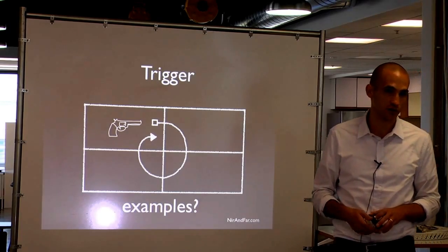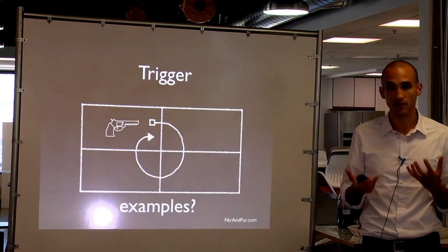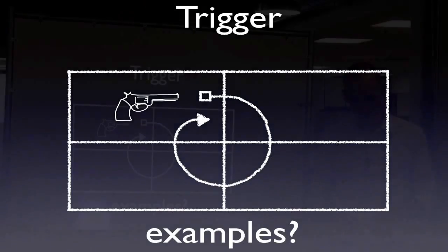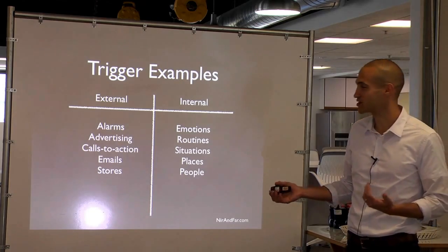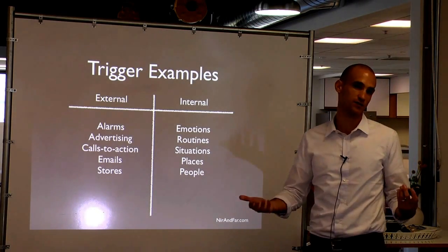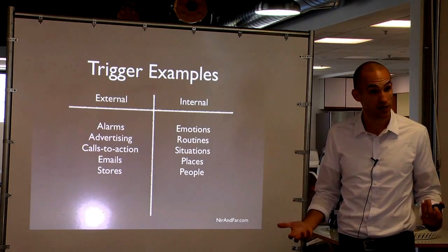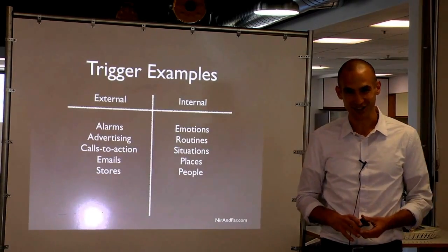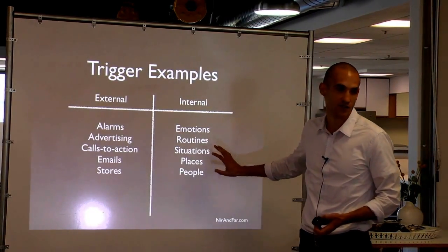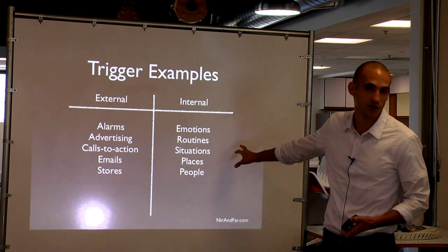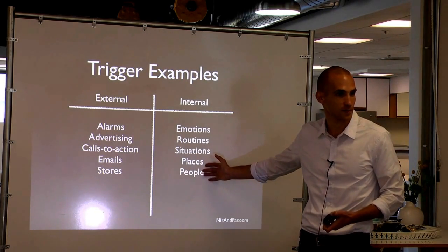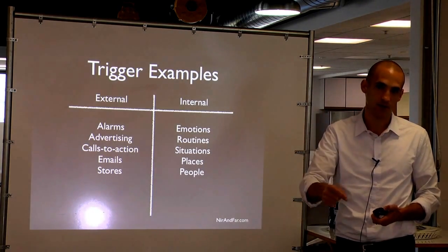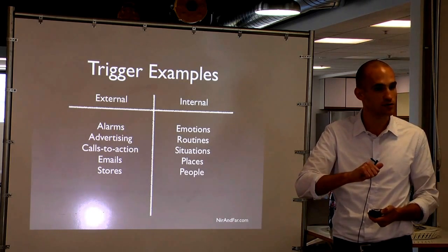The first step of the Desire Engine is the trigger phase. The trigger is the spark plug of the Desire Engine — it's the cue, the thing that happens right before the action. Triggers fall into two types: external triggers and internal triggers. External triggers are sensory stimuli in the world around us — like a 15-minute meeting notification sound. Internal triggers are things that occur within the user's own brain. This is really where the power of habit creation occurs — when you get the user to self-trigger every time they feel something and use your product.